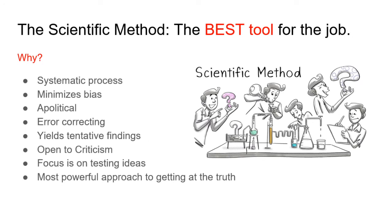I've mentioned the scientific method is not only what scientists use, but it is the best tool that scientists can use for the job of understanding human behavior, or understanding anything else in the universe for that matter. Why? We've already mentioned that it's a systematic process. It minimizes bias. It's apolitical. It's error correcting. It yields tentative findings, not absolute truths with a big T. It's open to criticism. It focuses on testing ideas, not confirming biases or conclusions. And of course, finally, it's the most powerful approach to getting at the truth with a little t, getting at an approximation of the truth, getting at what we call provisional truth.